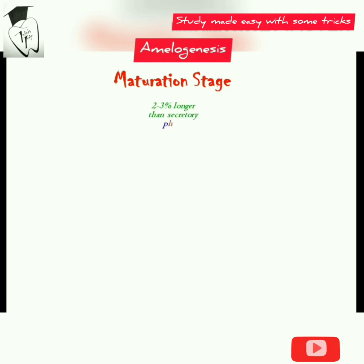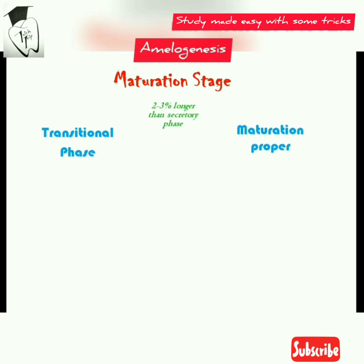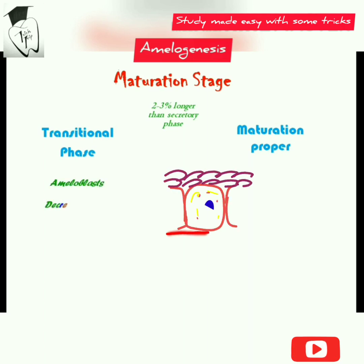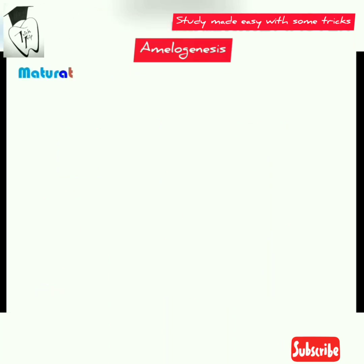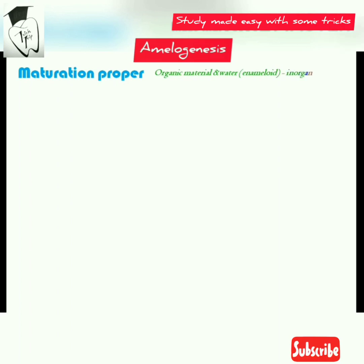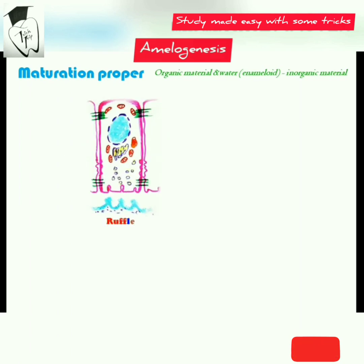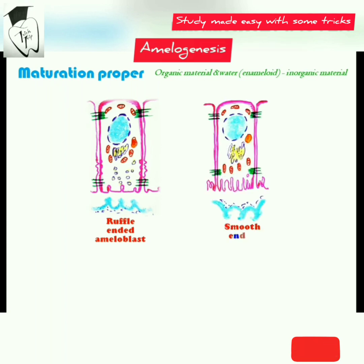The maturation stage is two to three times longer than the secretory stage. In the transitional phase, ameloblasts undergo reduction in height and volume, and 25 percent of ameloblasts die by apoptosis. In maturation proper, organic material and water in the enamel are replaced by inorganic material through a process called modulation. Ameloblasts present as either ruffle-ended or smooth-ended, with cells spending 80 percent of their time as ruffle-ended ameloblasts.